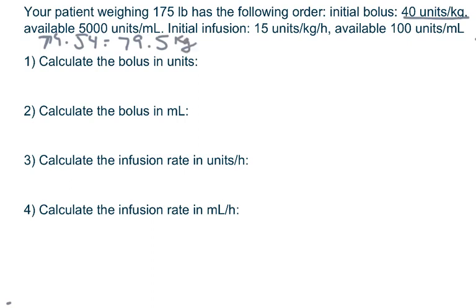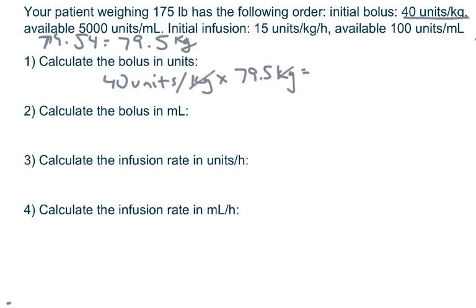For the first part, multiply 40 units per kilogram times his 79.5 kilograms. The kilograms cancel, so 40 times 79.5 gives 3,180 units.